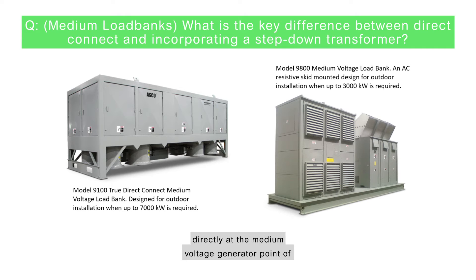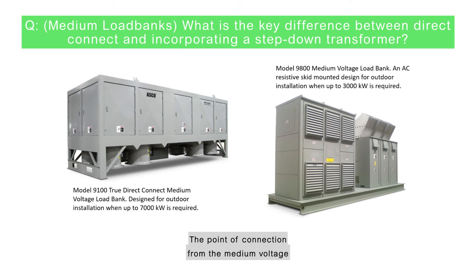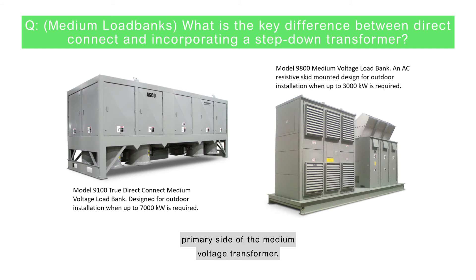With the model 9800 shown on the screen here, you are integrating a low voltage load bank, typically 480 volts, with a medium voltage transformer. The point of connection from the medium voltage generator to the load bank in this instance is the primary side of the medium voltage transformer.